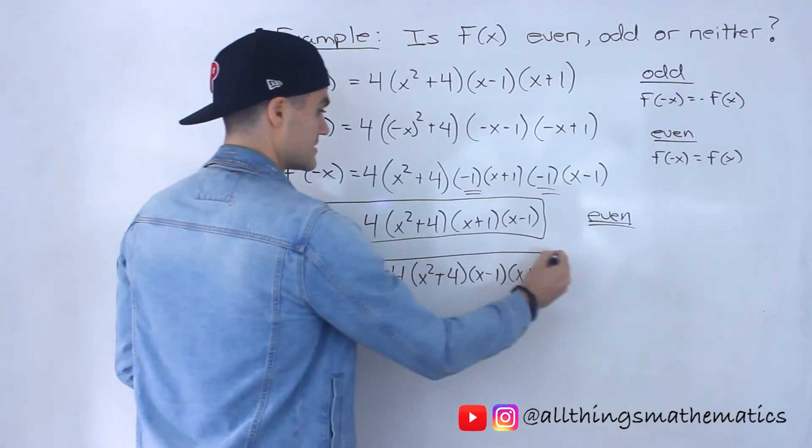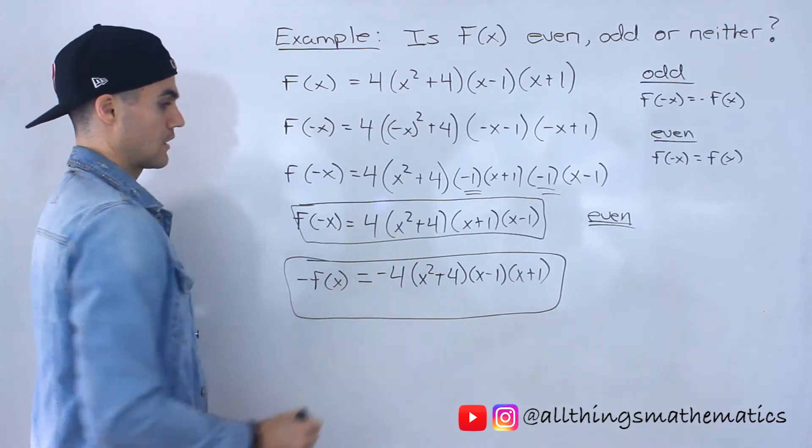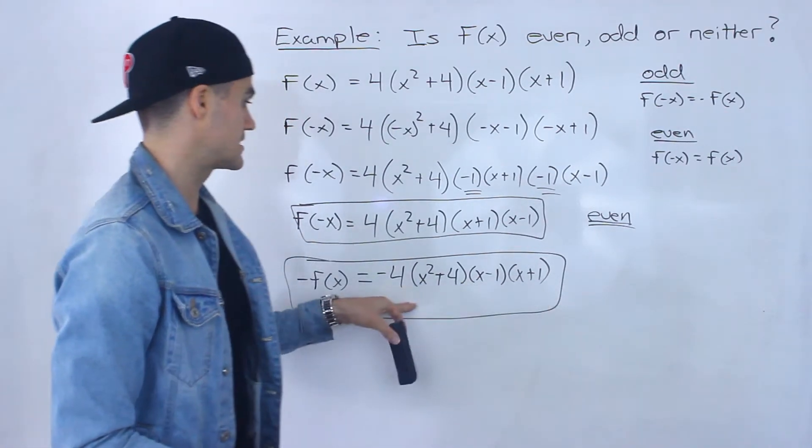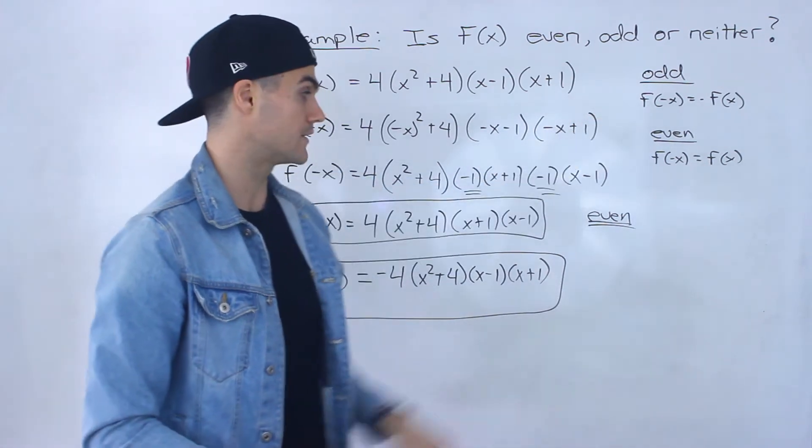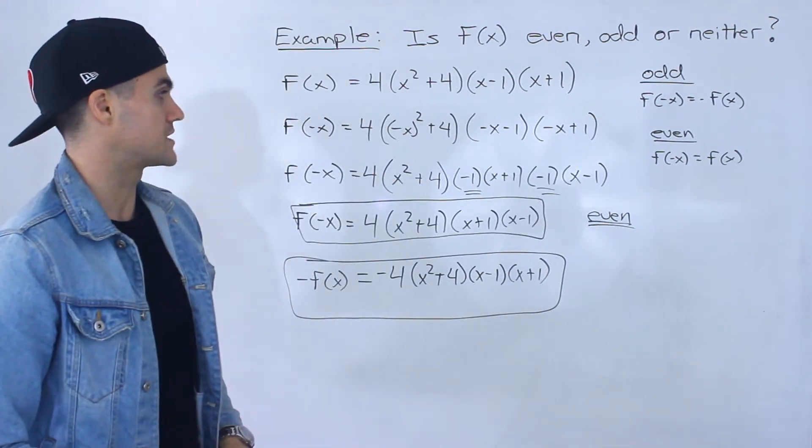So only that expression in the front gets multiplied by negative 1. Right? So that is negative f of x. And notice that this is not equal to that, so we know the function is definitely not odd. Right? So this function ends up being even.